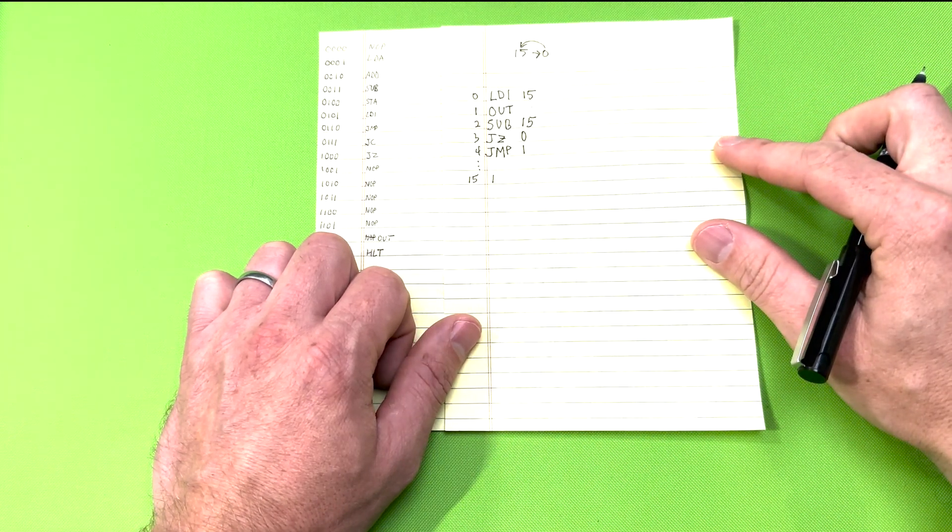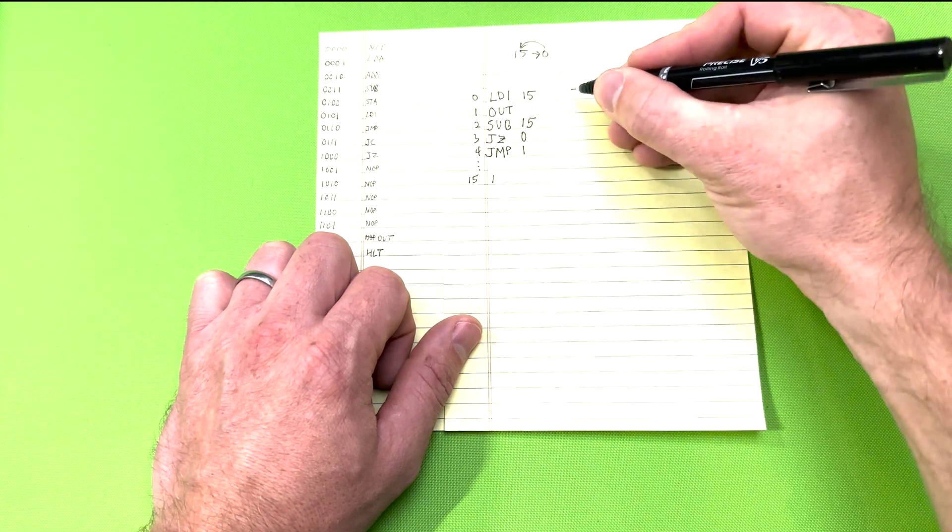Since our computer can only store up to 16 values in RAM, we can use 4 bits to indicate the RAM location.